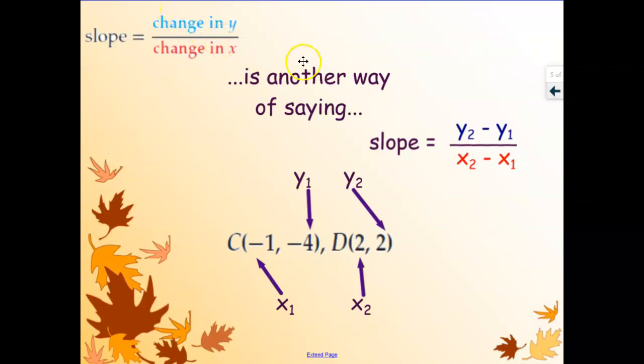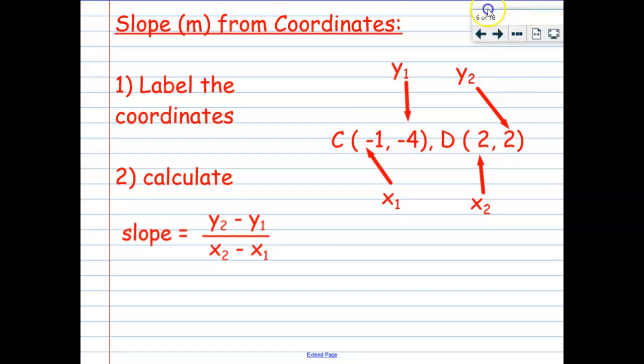So change in y over change in x is another way of saying change in y point change in x point. And when we're talking x and y's, we mean these coordinates. That's x1, that's y1, that's x2, that's y2. And that brings us to the very, very exciting slope formula. All right, go ahead and hit pause and write all this business down.